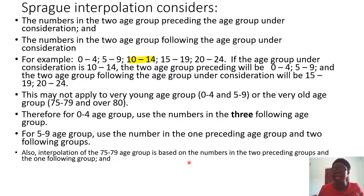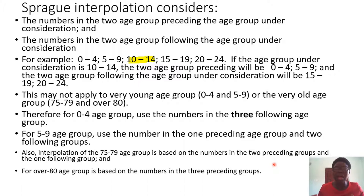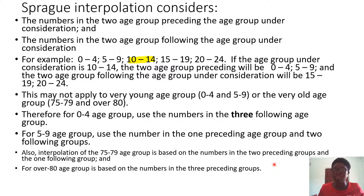For ages 75 to 79 and 80 and above, you consider the preceding groups and one following group. For 80 and above, the estimate is based on the numbers in the three preceding groups — just like 0 to 4 uses three following groups. For 75 to 79, you treat it similarly to how you treat 5 to 9.